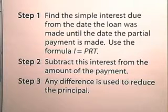Step 1, we find the simple interest due from the date the loan was made until the date the partial payment is made, and we use the formula interest equals principal times rate times time. Step 2, we subtract this interest from the amount of the payment. Step 3, any difference is used to reduce the principal.